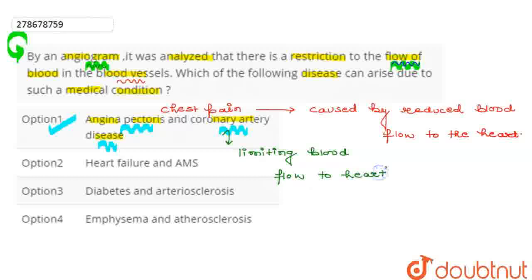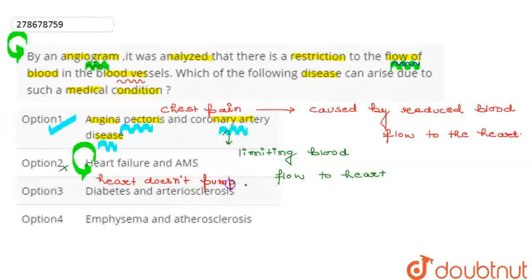The second option is heart failure and AMI. This is a condition of chronic heart failure, which is a chronic condition where the heart cannot properly pump blood.